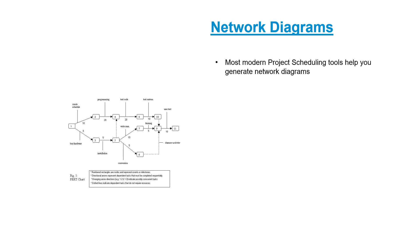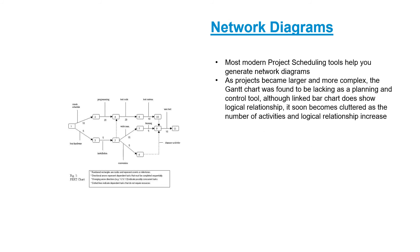Alright so as we have learned how to draw a network diagram, now let's review some of the basic theory. Firstly most modern project scheduling software tools would help you generate network diagrams. So if you are using a tool like Microsoft Project or Primavera or Astro Project, all you have to do is specify the tasks and their durations and the logical sequence and the software would automatically generate a network diagram.